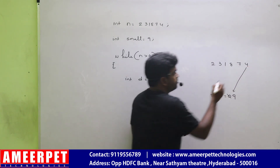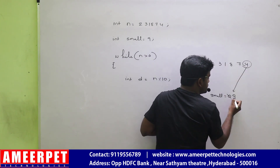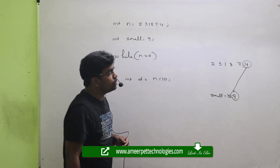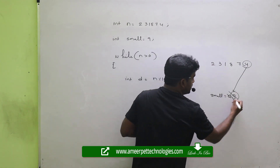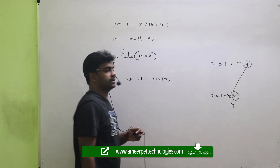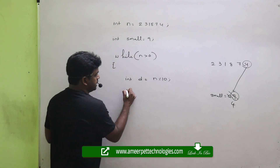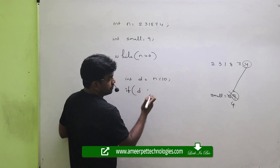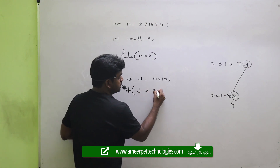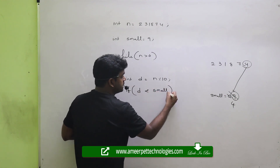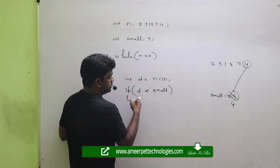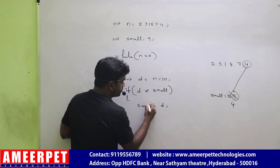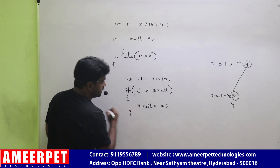If you find out the digit which is smaller than what you considered, just store that digit into small — now it is the smallest one. The condition is: if the digit is lesser than the smallest digit what you have considered, store that digit into small.